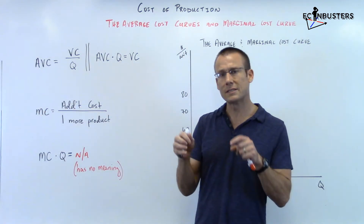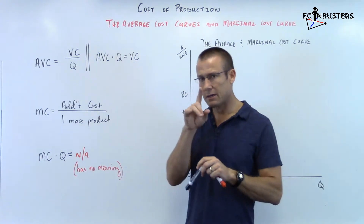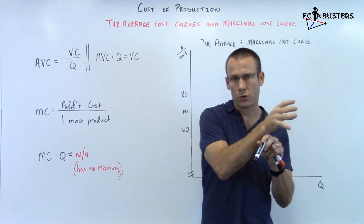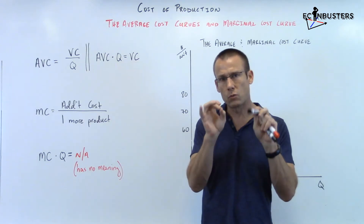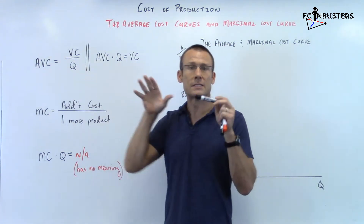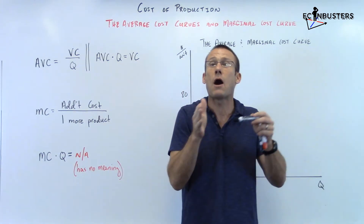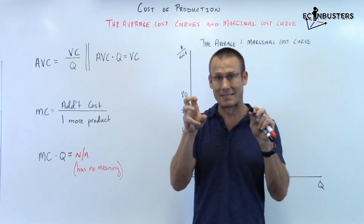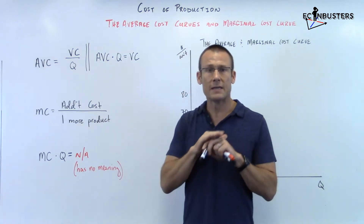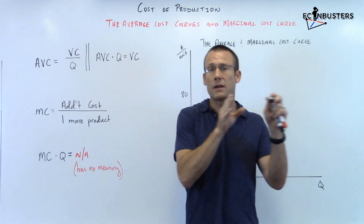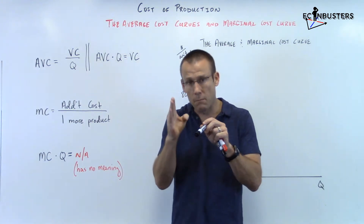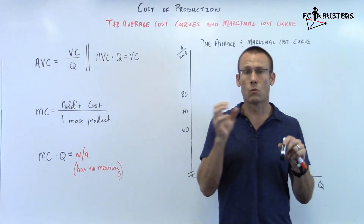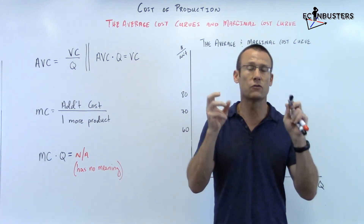Marginal cost is the additional cost of producing one more unit. Here's a key point: marginal cost is specific for whichever unit we are producing. Average variable cost is dependent — whatever the average is depends on how much we produce. Not true for MC. Its value is not dependent on how much we produce. It is literally telling us how much it's going to cost us to produce each additional unit. Whatever it is for the 38th good, that's what it is for the 38th good.